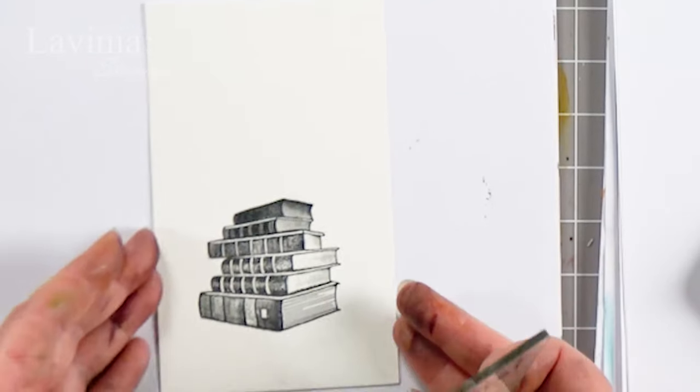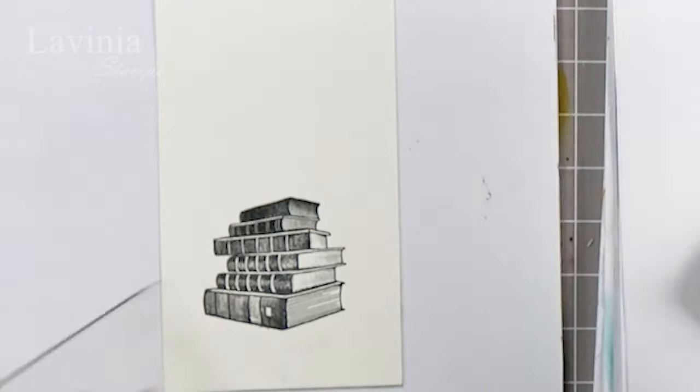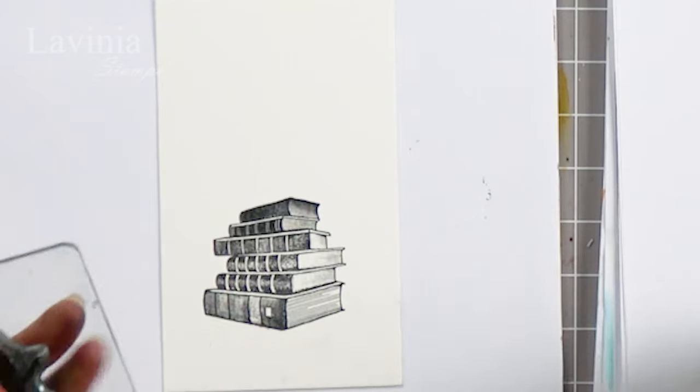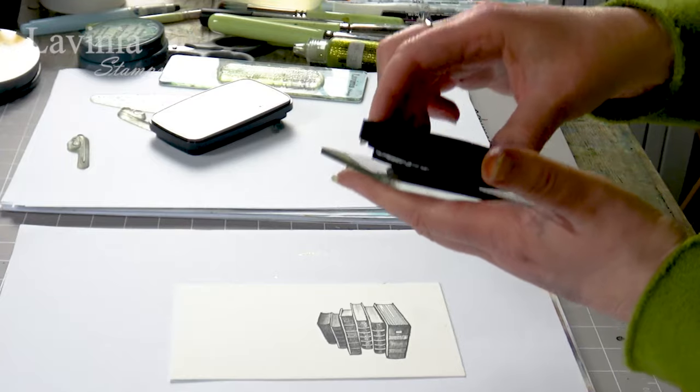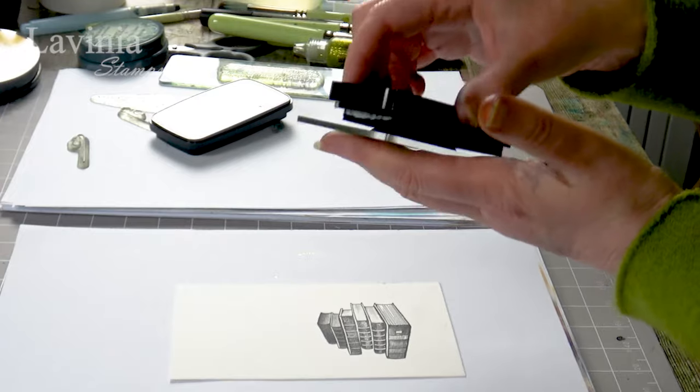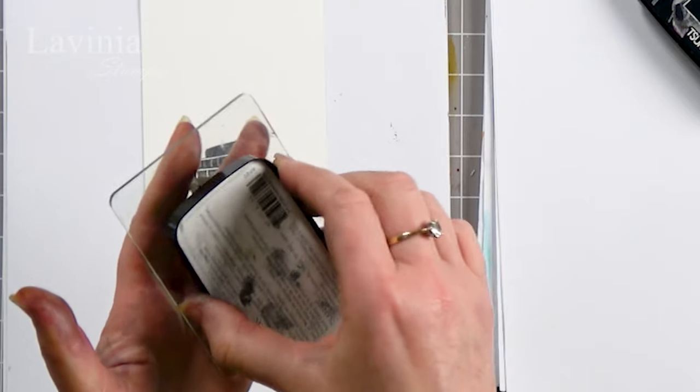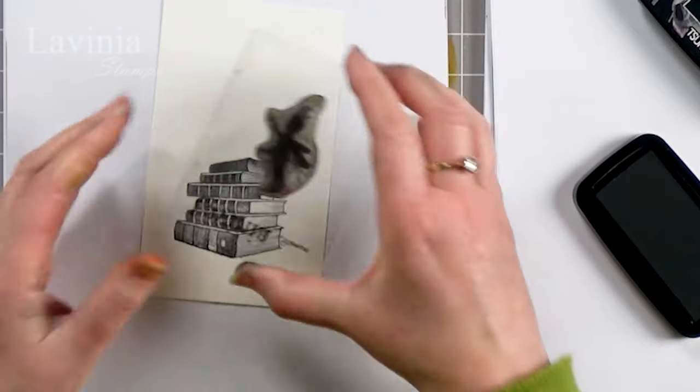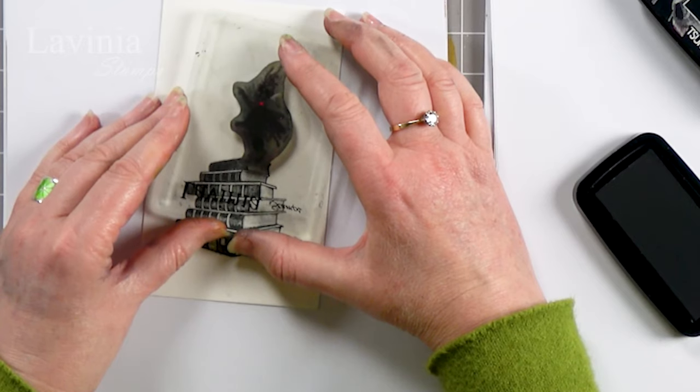And see what we've got, there we go. So the next thing I'm going to do is stamp our little Rory on top of the books. So make sure that he's completely covered. Being a silhouette it's always a little bit more tricky. If you hold it to the light you can see where the ink is wet on the stamp, which gives you a bit of a guide. So I'm going to pop him on the very edge there.